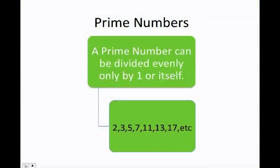First let's understand what is a prime number. A prime number can be divided evenly only by one or itself. For example, 2, 3, 5, 7, 11, 13, and 17 are prime numbers. As you can see here, I can only divide 11 by 1 or 11, I can only divide 17 by 1 or 17, and so on.